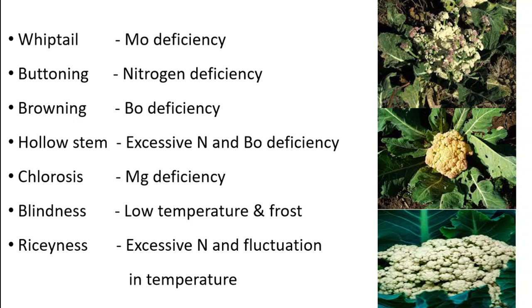Now let us see about the physiological disorders in cauliflower. Whiptail is due to molybdenum deficiency, where you can observe only the midrib of the leaf blade, and hence it is called whiptail. Next is buttoning, which is due to nitrogen deficiency, where you can observe development of small curds in young plants.